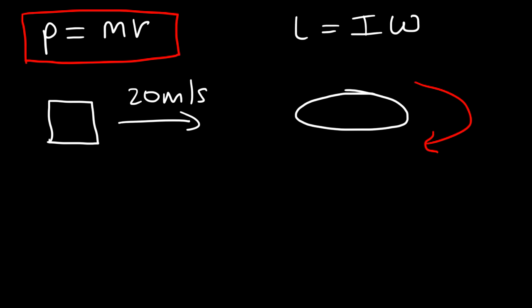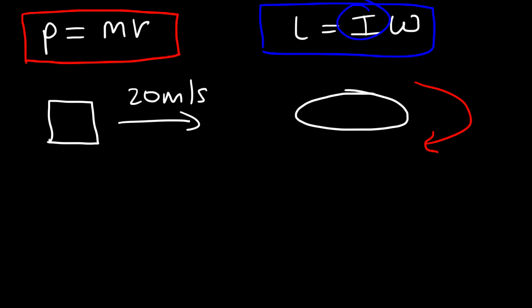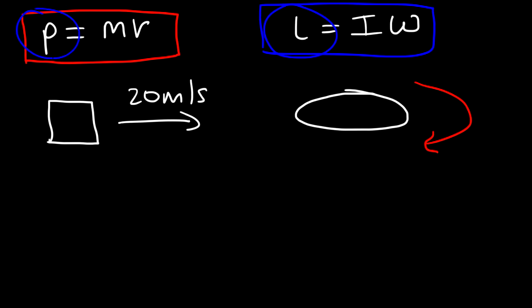Angular momentum, like linear momentum, is a vector quantity — it has both magnitude and direction. Notice the similarities between these two equations: inertia is the rotational equivalent of mass, angular velocity is the rotational equivalent of linear velocity, and angular momentum is the rotational equivalent of linear momentum.